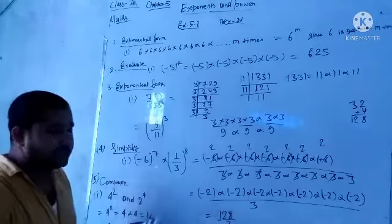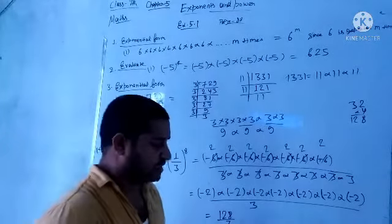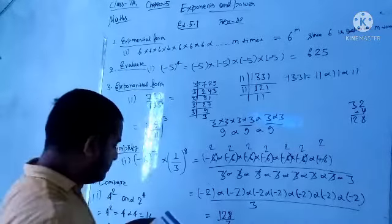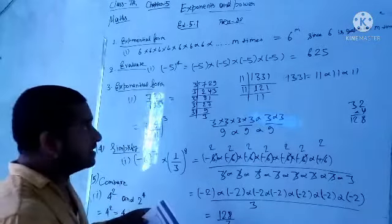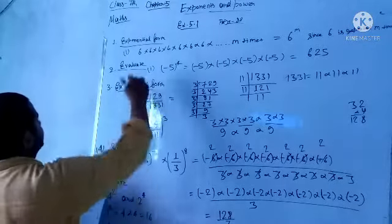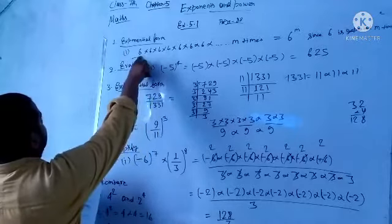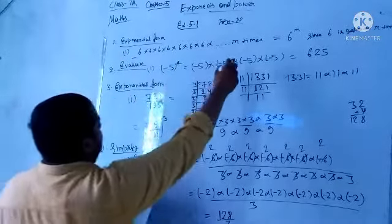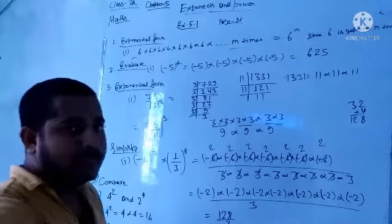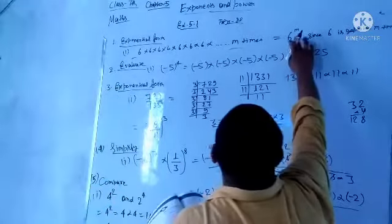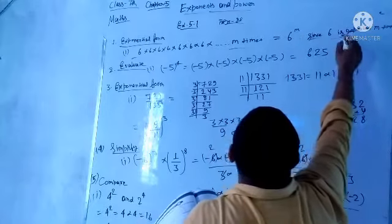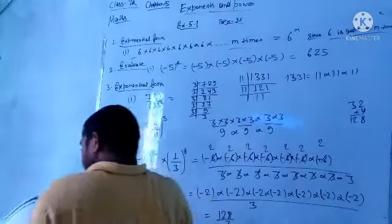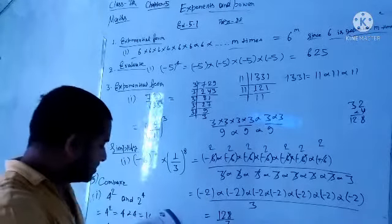Exercise 5.1. Express each of the following in exponential form. So, the question is 6 multiplied 7 times. If you have an exponential form, then what is 6 to power 7?